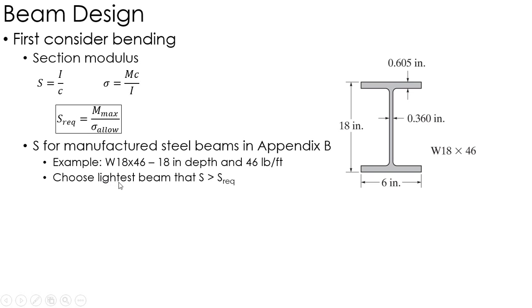And then after that, we choose one that has the lightest weight per foot because that's the less material. Generally, it will be the cheapest beam.